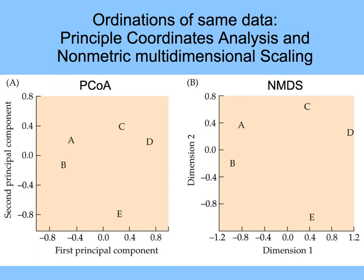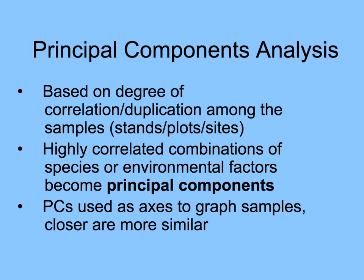Principal components or coordinates analysis and non-metric multidimensional scaling give similar results, but not always exactly the same. You can see the two axes on the principal components analysis — X and Y — and in NMDS those are called dimensions. Both show the same relative arrangement of communities: A and B are closer to each other, C and D are closer to each other, and E is farthest away — using the same data from the tables we looked at earlier. The axes in principal components are highly correlated combinations of environmental factors or species, which become the principal components used to compare the different sites or samples.